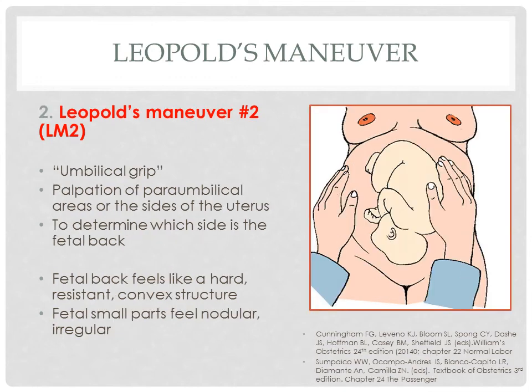Leopold's maneuver 2 or LM2, also called the umbilical grip, is palpation of the paraumbilical areas or sides of the uterus to determine which side is the fetal back and which side has the fetal small parts. A hard, resistant, convex structure is the fetal back; nodular or irregular small parts are the fetal extremities. In this picture, the fetal back is on the left side of the mother.